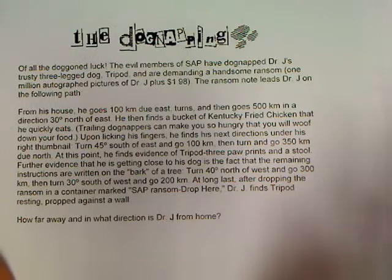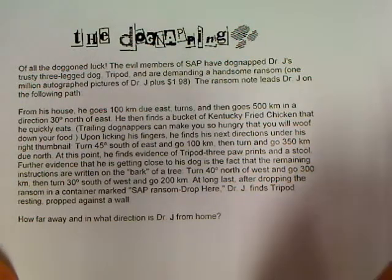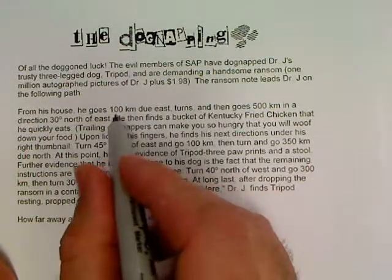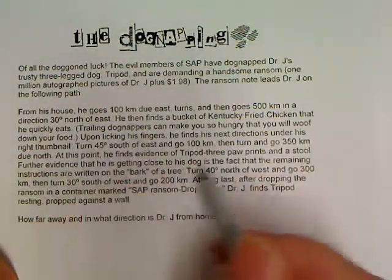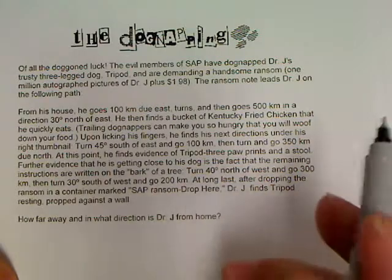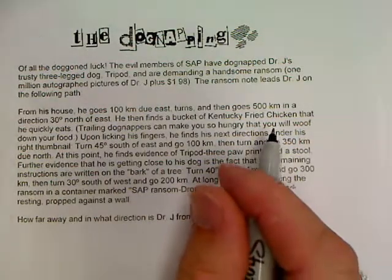Anyway, you can read it, but apparently someone has kidnapped Dr. J's dog and left him a ransom note. They've given him a set of instructions in the problem on how to try and find his dog back. So let's see if we can't draw this one out.